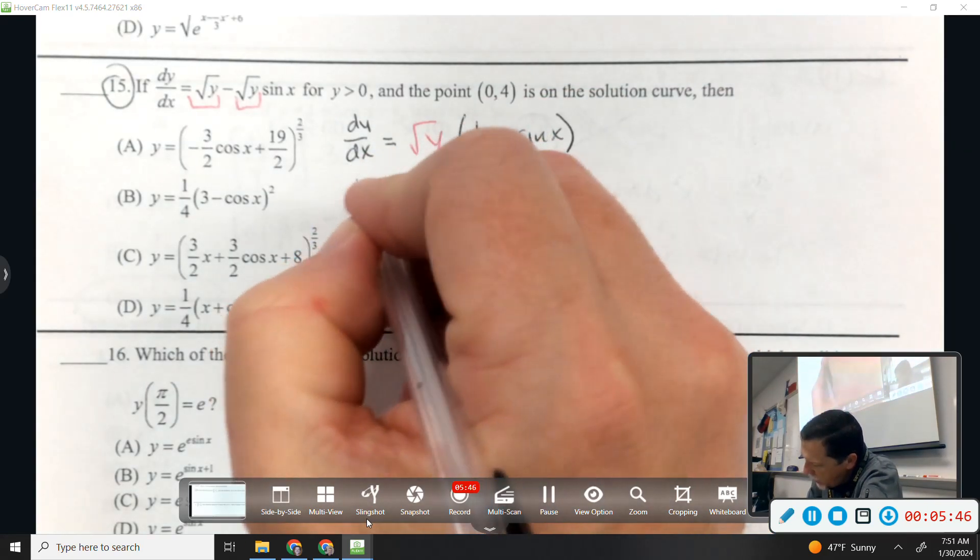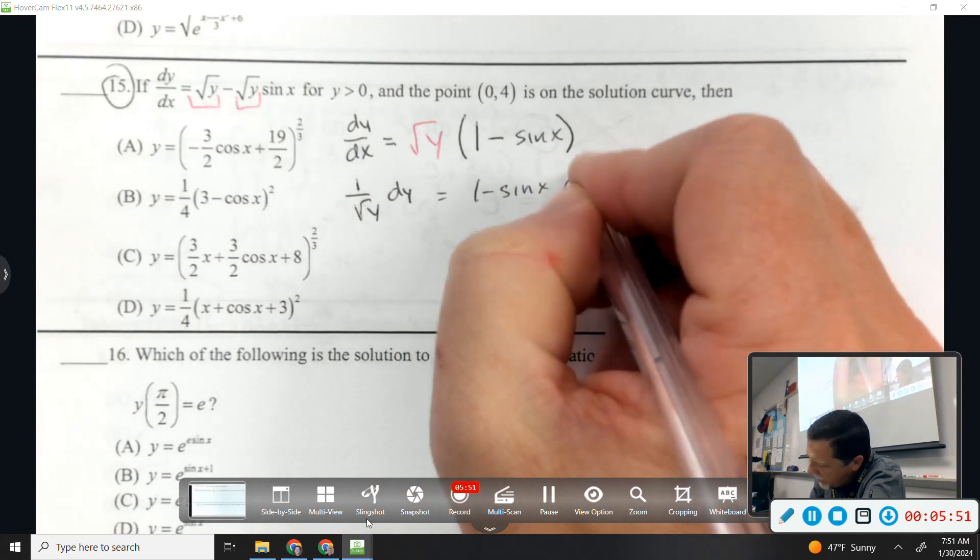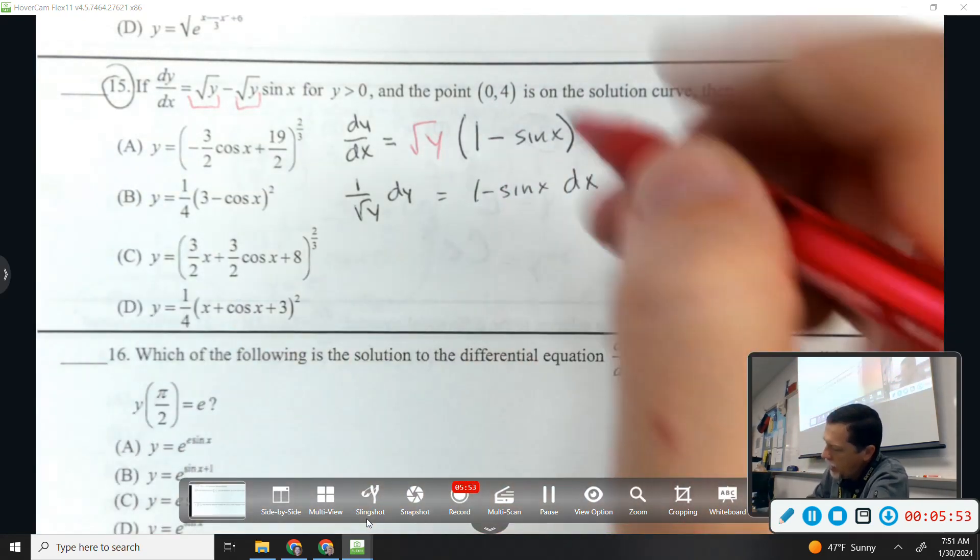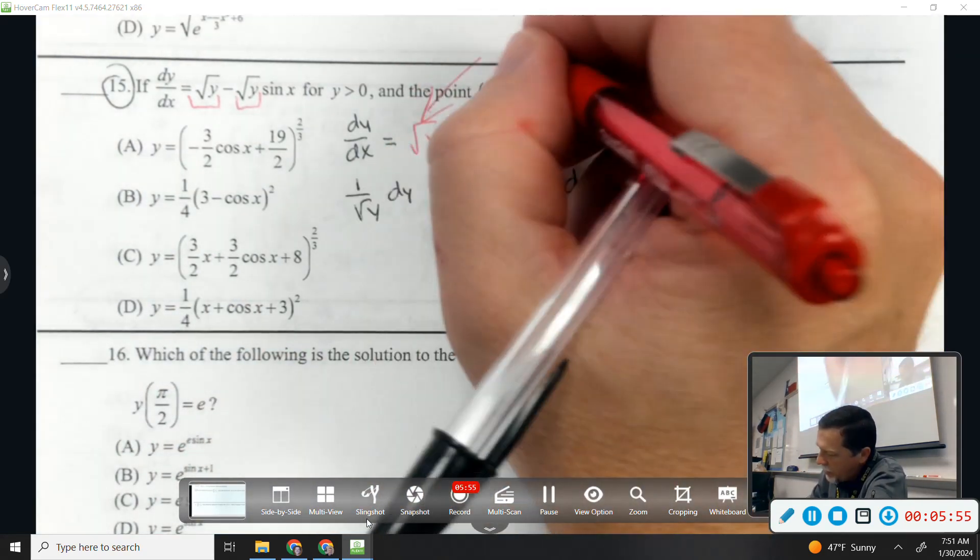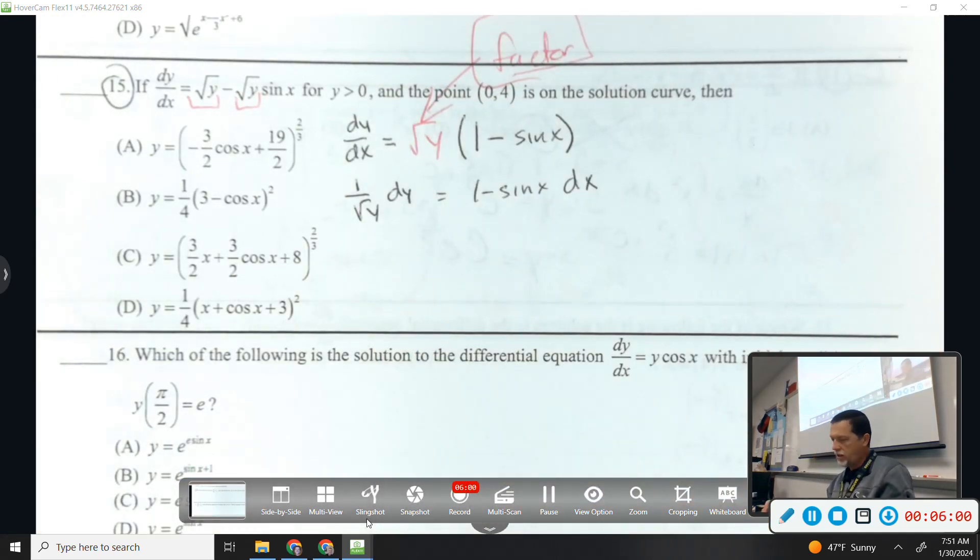Let's factor it out. So that leaves me 1 over the square root of y dy, 1 minus sine x dx. So that was the reason I wanted to work this problem, is the factoring issue. Happens on number 14 as well.